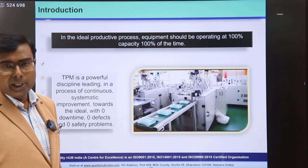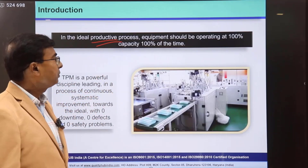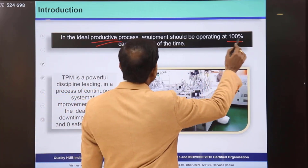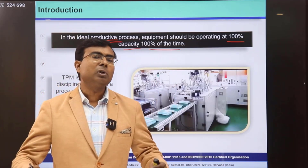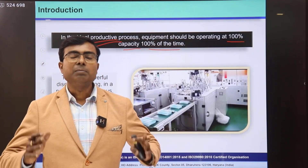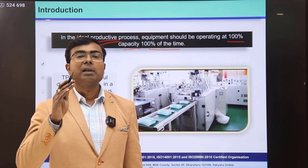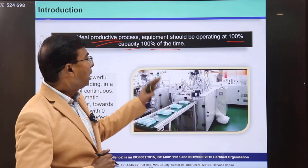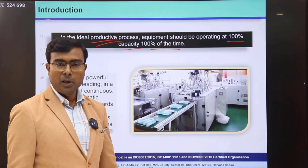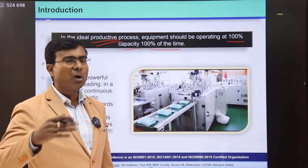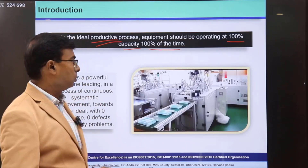Now let's explore why OEE is important for any organization. In any productive environment, an organization would always want to be operating at 100% of capacity and 100% of the time. For example, a production manager would typically say: I want the machine to be available whenever I want to make production, 100% of the time. OEE is a very good metric that talks about certain elements, how they need to be calculated, and further analyzed.